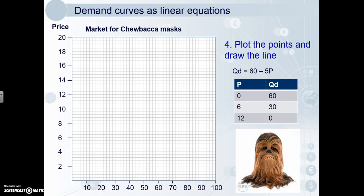The last step is to plot the points and draw the line. We have our data: price zero, quantity 60; price six, quantity 30; and price 12, quantity zero. Then we add our line — it will always be a straight line — and we are done.